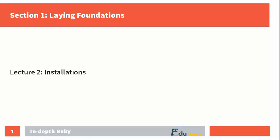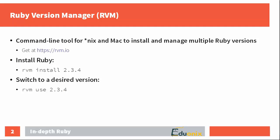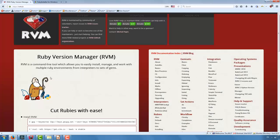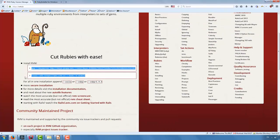Hello and welcome to the In-Depth Ruby course on Adonics. My name is Ilya, and in this lecture we are going to install Ruby on your PC and prepare your machine for further studying. If you're working on a *nix system or on Macintosh, you can install multiple Ruby versions at once using the RVM tool — that's the suggested way since you can easily switch between different versions with basically one command. To get RVM, visit rvm.io — here it is — and run these two commands to install it.